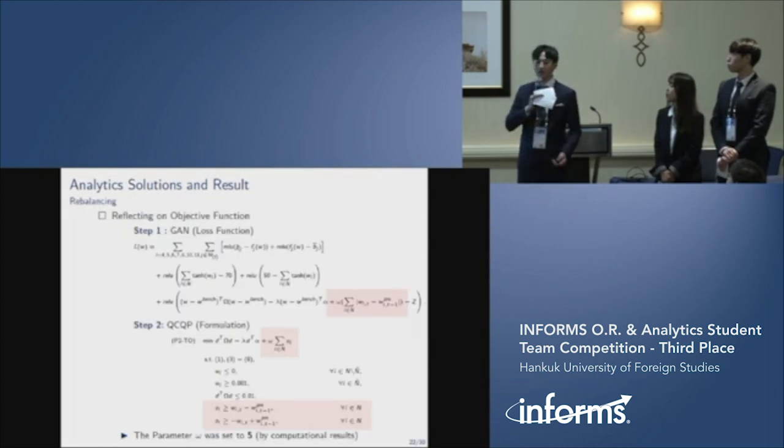Next, we want to talk about how we reflect the turnover in our methodology. In GAN, we consider the turnover in the loss function of discriminator like this. In the QCQP formulation, we consider the turnover in the objective function and constraints by introducing decision variables. We set parameter omega to 5 by computational results.